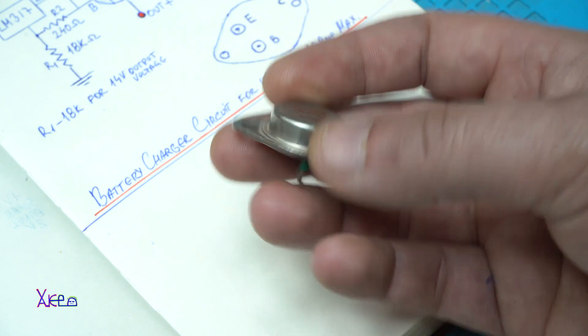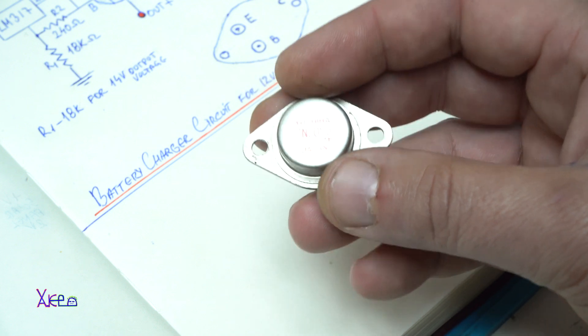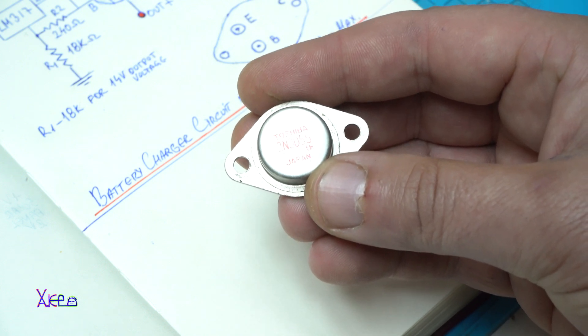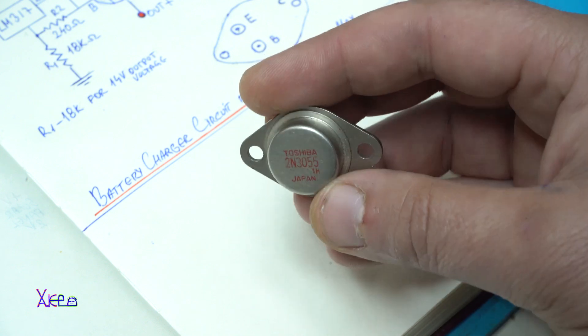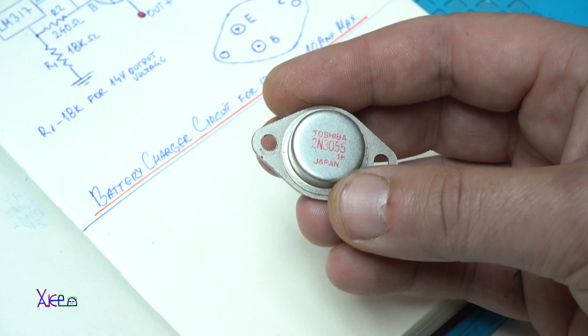And what you can do with this transistor? You can make a battery charger that can deliver or charge the battery with 10 amperes maximum. Let's start today's video project.